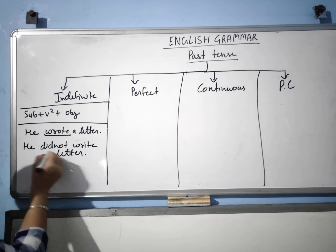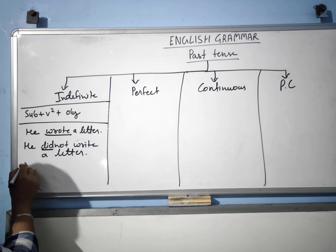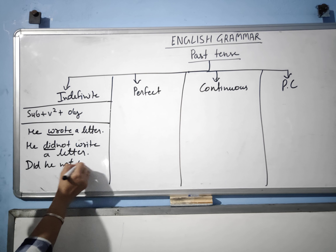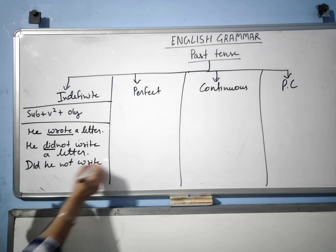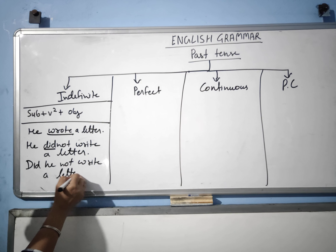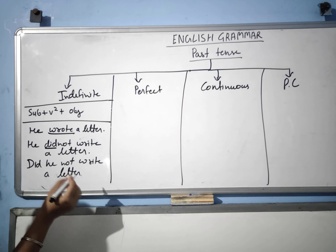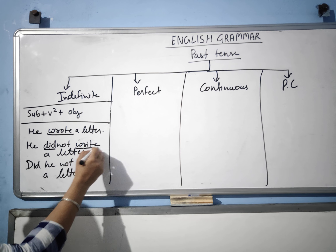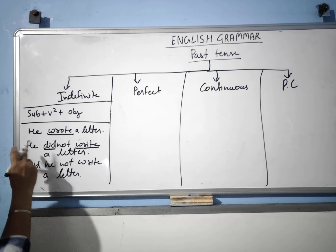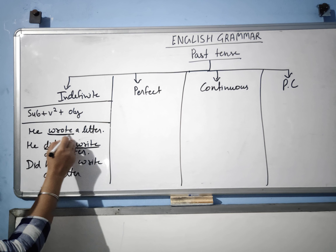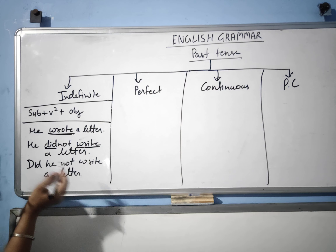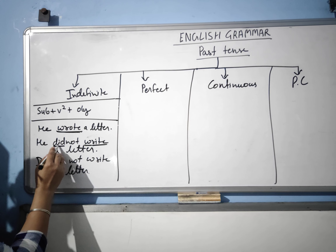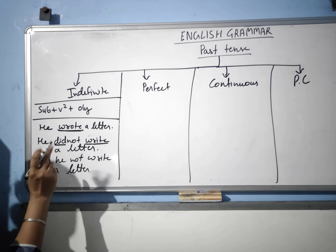And in interrogative, 'did' will come in the beginning of the sentence: 'Did he not write a letter?' Note that with 'did', you write only the first form of the verb. Without 'did', you write the second form, because 'did' is the second form of 'do'. So in one sentence, there is only one second form.